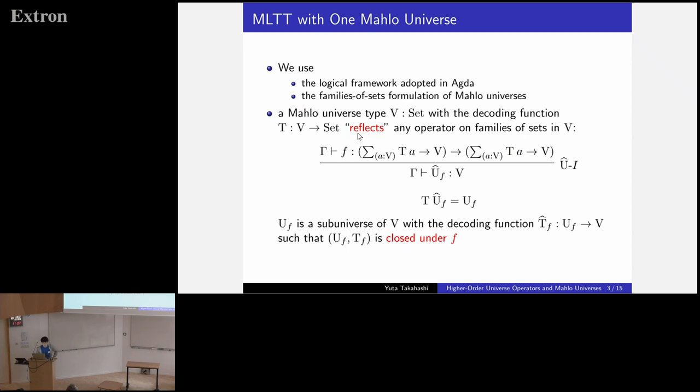Then, a Mahlo universe type V with a decoding function T reflects any operator on family of sets in V. In other words, if we have an operator F on families of sets in V, then we have a universe UF. UF is a subuniverse of V with a decoding function such that this family is closed under F. So, this is an instance of reflection.